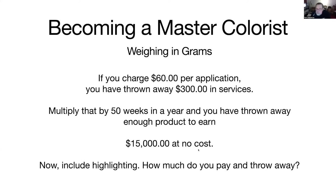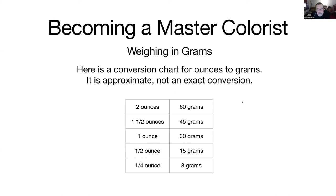Include highlighting too — how many times have you seen someone in the salon, or you yourself, throw away a third or half a bowl of highlighting mixture? It's just money down the drain. Here's a conversion chart — it's approximate: two ounces is not exactly 60 grams but it's close enough. A half ounce is 15 grams. You can count two ounces of color as 60 grams.